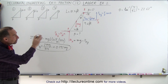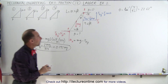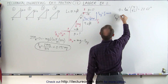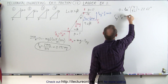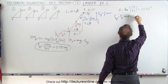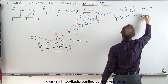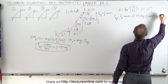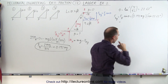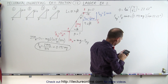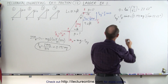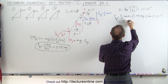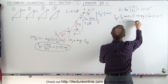Now we're ready to find the individual components of B — Fb in the y direction and Fb in the x direction. Fb in the y direction equals Fb times the sine of theta, which is 0.192mg times the sine of 22.62 degrees. That gives us 0.074mg.